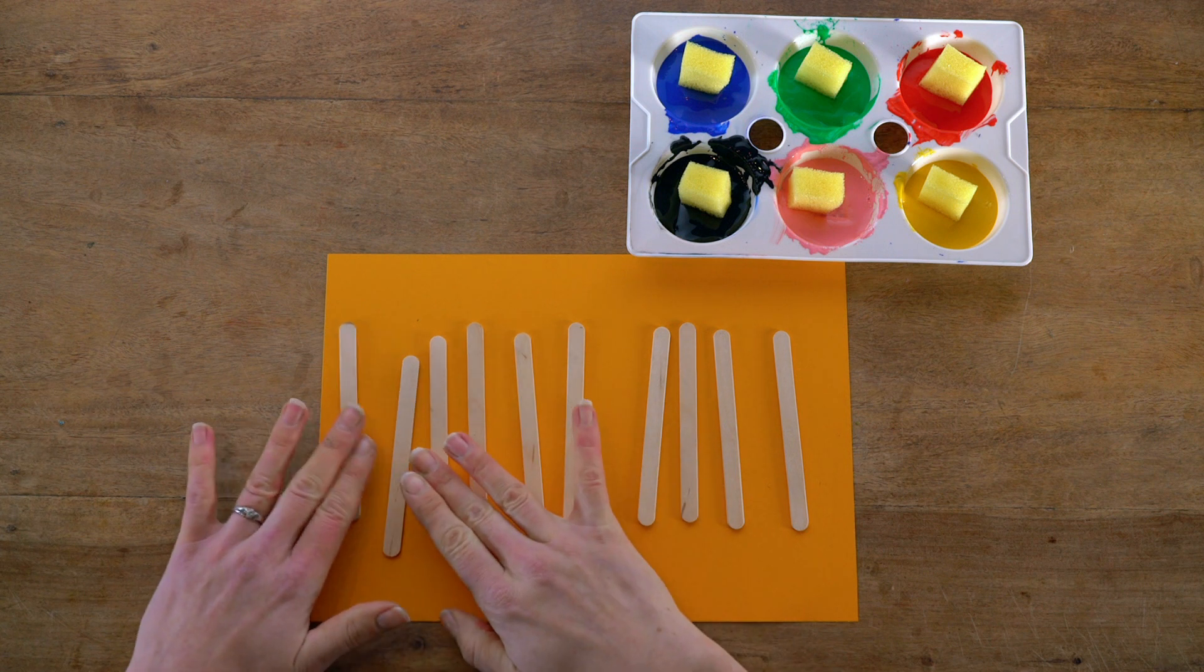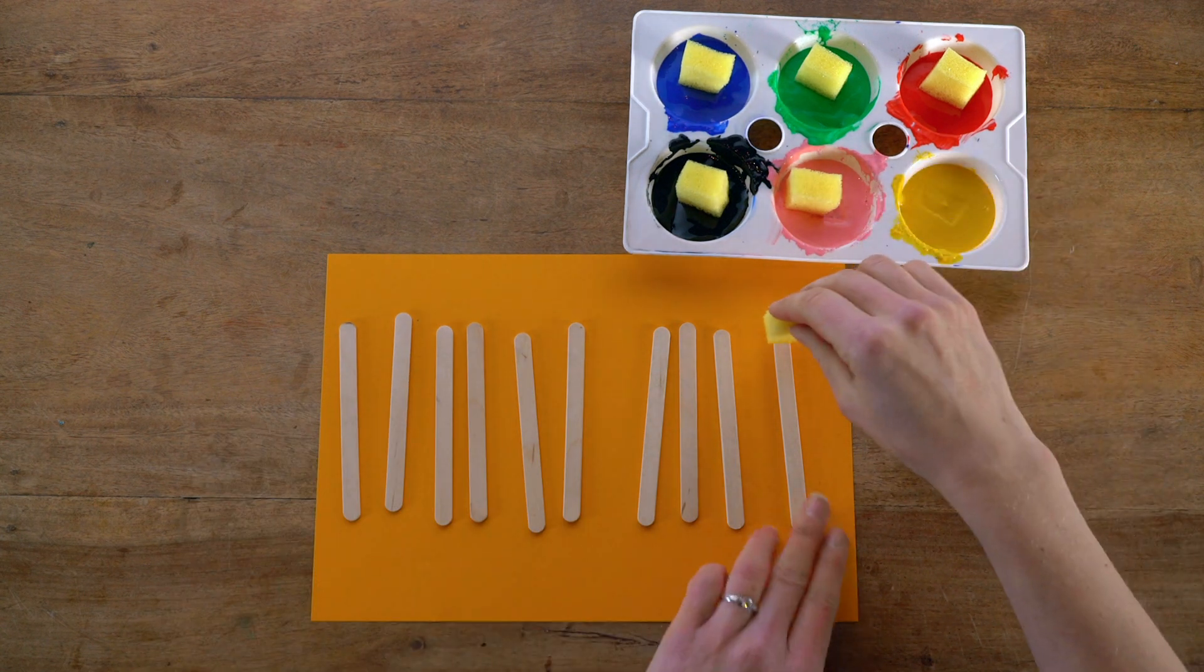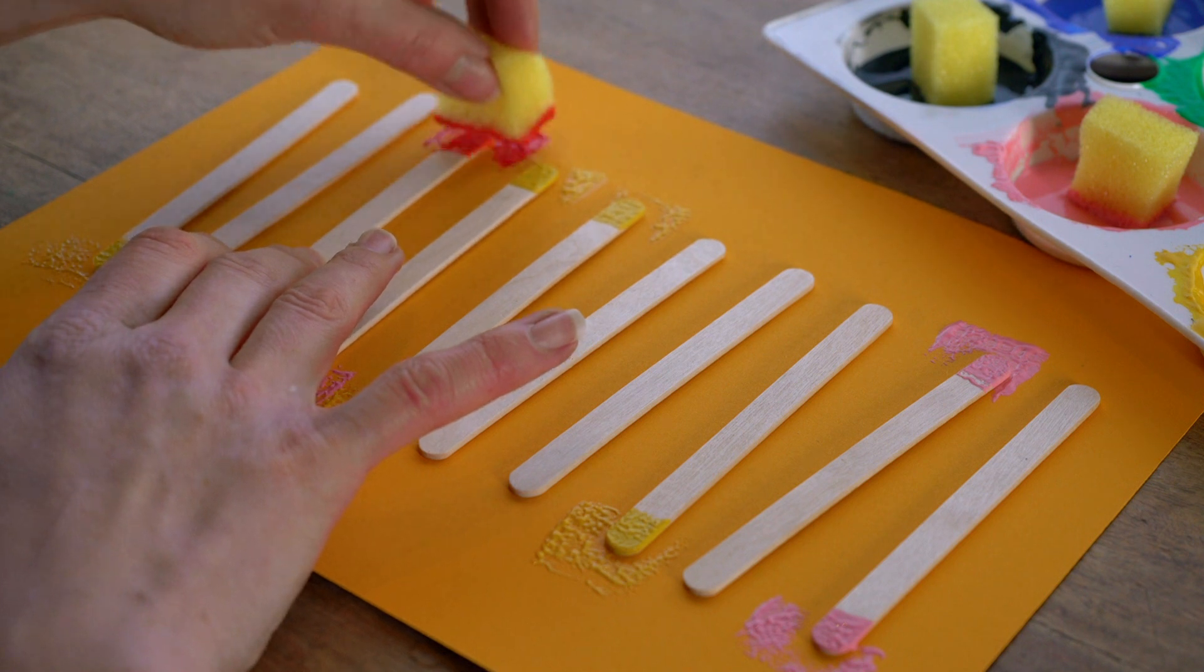Simply lay them all out on a protective surface and dab some old sponges into your paint and then dab the paint onto the ends of the sticks.